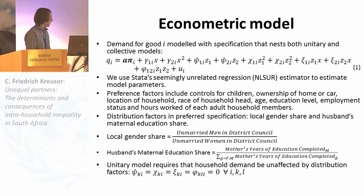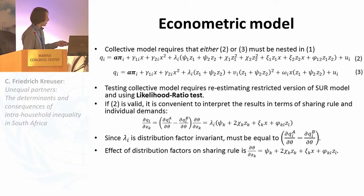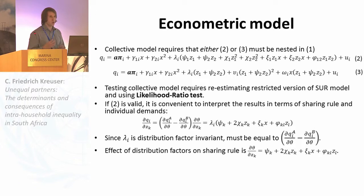If the unitary model is an accurate depiction of the data, we would expect all distribution factor coefficients to be zero. The proportionality condition implies that either equation two or three must be nested within the unrestricted equation. We re-estimate these equations using the non-linear SUR estimator and use the likelihood ratio test to assess whether they are nested. Focusing on equation two, if this equation is valid, it is convenient to interpret results in terms of the sharing rule and individual demands. Since lambda is distribution factor independent, we expect it to equal the impact of changes in the sharing rule on household demand for the item, with the effect of the distribution factor on the sharing rule given by the term inside the brackets.